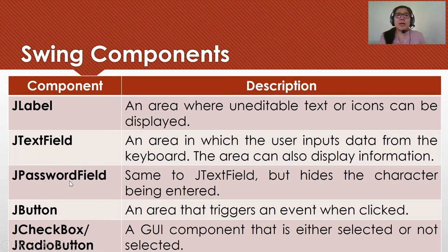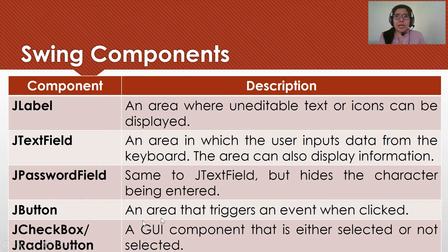That's the difference between J-Password Field and J-Text Field. If you use a text field, you can see what data is being input from the keyboard, while for J-Password Field it will hide the input. So this is applicable for login details, preferably for passwords. J-Button is an area that triggers an event when clicked. J-Checkbox or J-Radio Button is either selected or not selected. There is a difference between the two: with Checkbox you can select one, two, or all, but for J-Radio Button you can select only one.